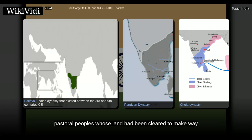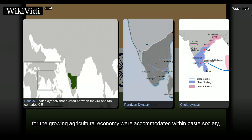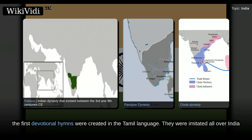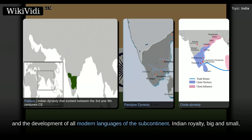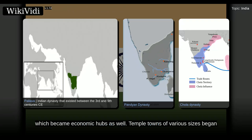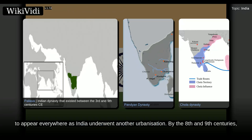During this time, pastoral peoples whose land had been cleared to make way for the growing agricultural economy were accommodated within caste society, as were new non-traditional ruling classes. The caste system consequently began to show regional differences. In the 6th and 7th centuries, the first devotional hymns were created in the Tamil language. They were imitated all over India and led to both the resurgence of Hinduism and the development of all modern languages of the subcontinent. Indian royalty, big and small, and the temples they patronized drew citizens in great numbers to the capital cities, which became economic hubs as well. Temple towns of various sizes began to appear everywhere as India underwent another urbanization.